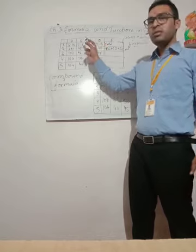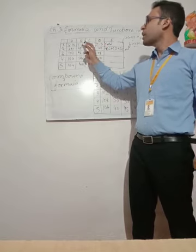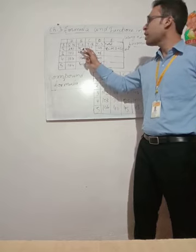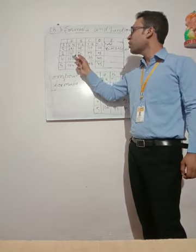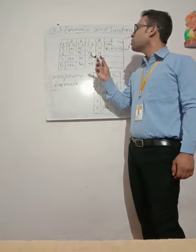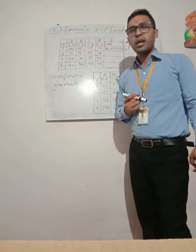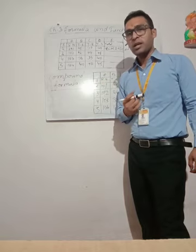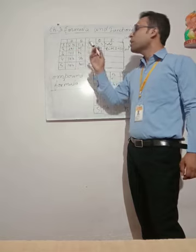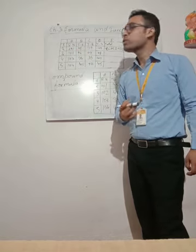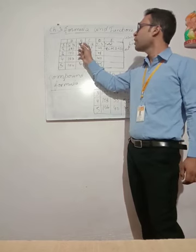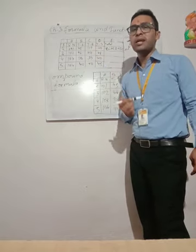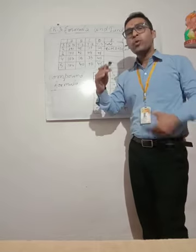There is a table I have created. We have certain data entered in our cells — all data is fed in. For simple addition calculation, we have a table with roll number, Term 1, Term 2, and Term 3 marks all fed in.